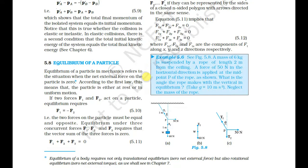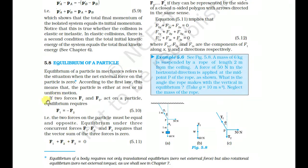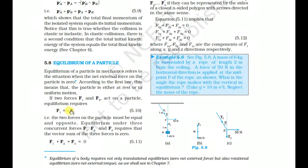According to Newton's first law, a particle is either at rest or in uniform motion. If two forces F1 and F2 act on a particle, equilibrium requires F1 = −F2. This means the friction force and the applied force are equal in magnitude.